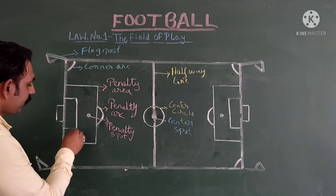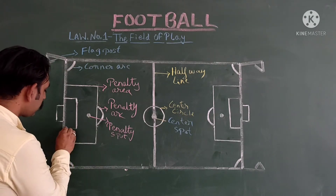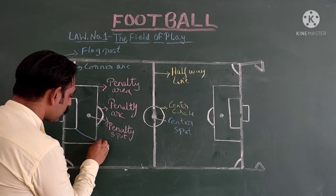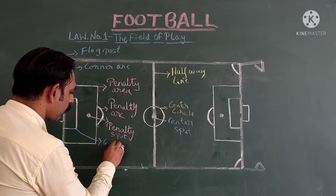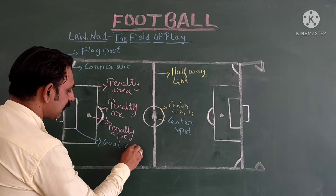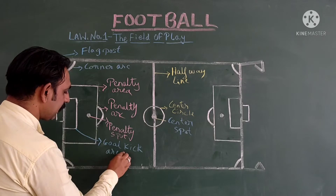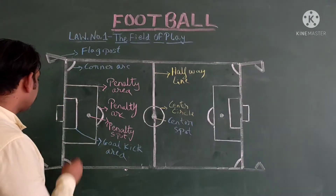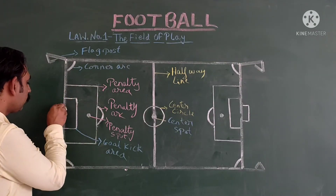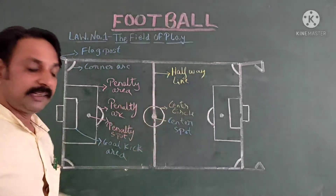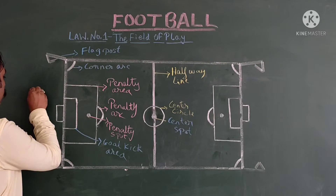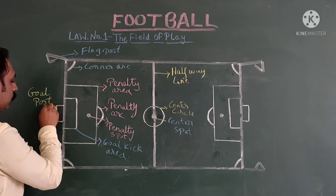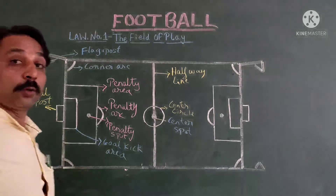Then we have a small box over here, and this small box is known as the goal kick area. And there is one more box outside of the field at both ends — that is known as the goal post.